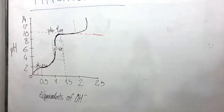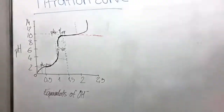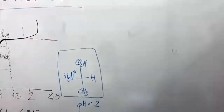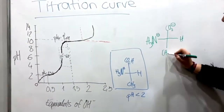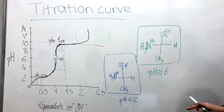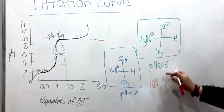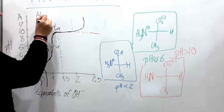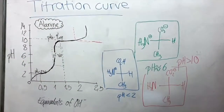Further addition of hydroxyl ions causes the increase of the pH. As mentioned, the pKa affects the amino acid structure. As the graph represents, if the amino group is positive, the pH is less than 2. If the amino group is positive and the carboxyl group is negative, the pH is almost 6. And lastly, if the carboxyl group is negative, the pH is more than 10.